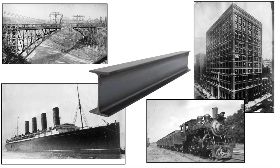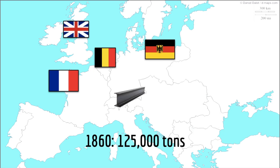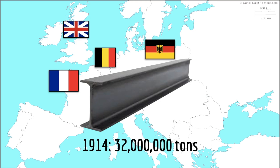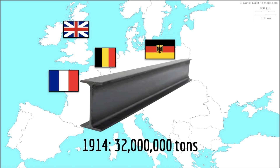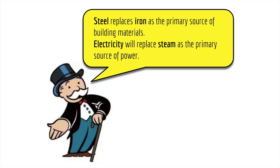Cities like Cleveland and Pittsburgh are going to become steel cities whose main business will be the manufacture of steel. In Europe in 1860, England, France, Germany, and Belgium were producing 125,000 tons of steel. After the implementation of the Bessemer process, by the start of World War I in 1914, these countries alone are producing 32 million tons of steel — a huge jump in the course of about 50 years. Steel replaces iron as the primary source of building materials.